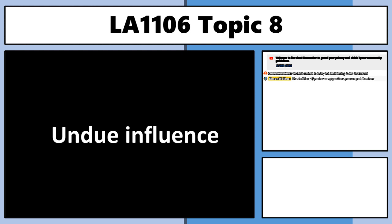Topic eight: we're going to look at undue influence. Key thing to note here — there are two equitable vitiating factors we're going to look at: undue influence and unconscionable transactions. I'm going to do the remedies for each of those separately because the remedies, defenses, and excuses for these are essentially the same. The next recording will be on unconscionable transactions, then a separate one on remedies for both.